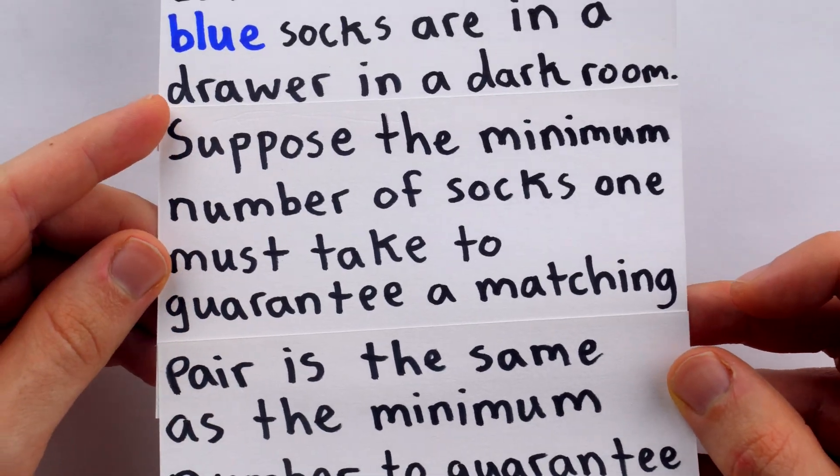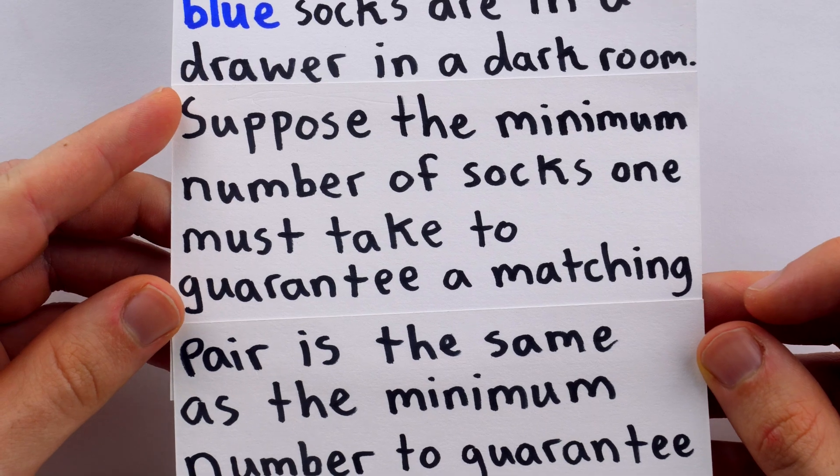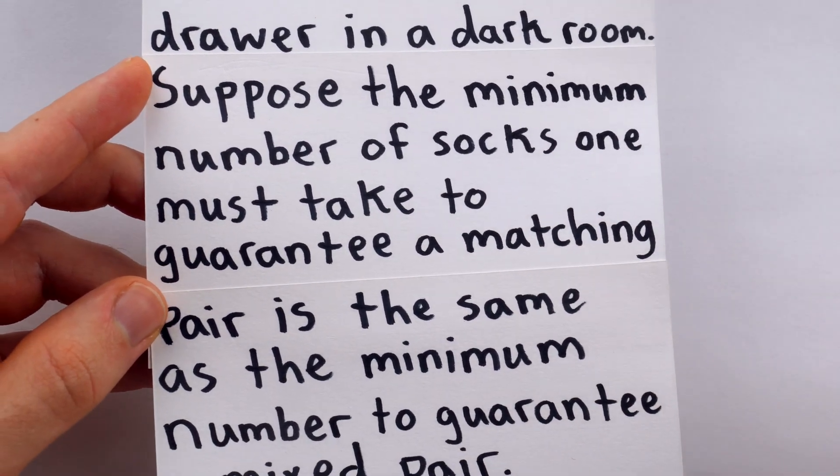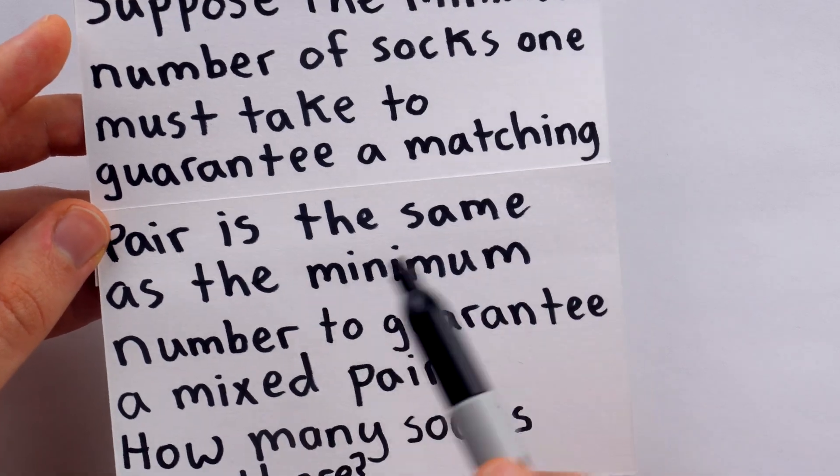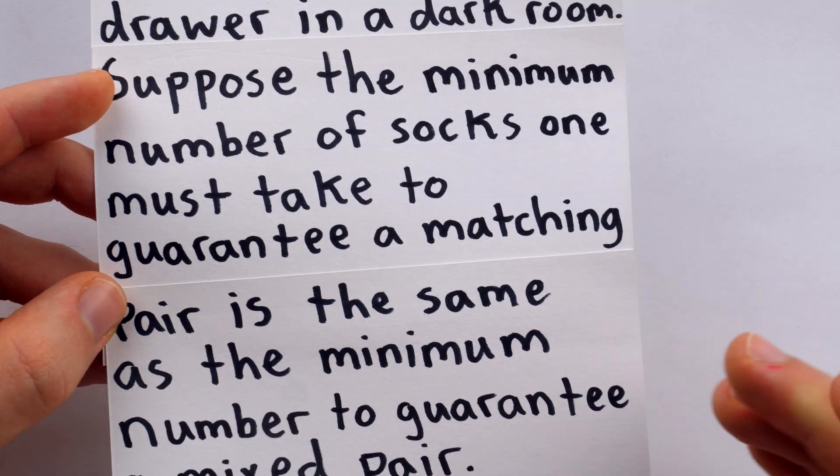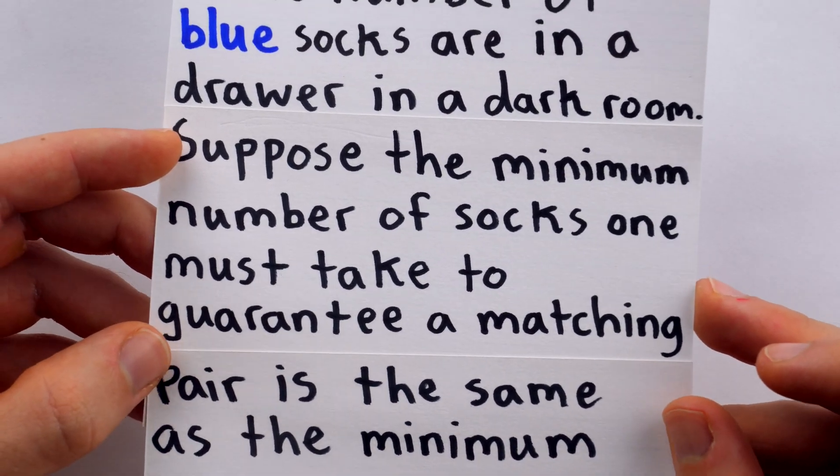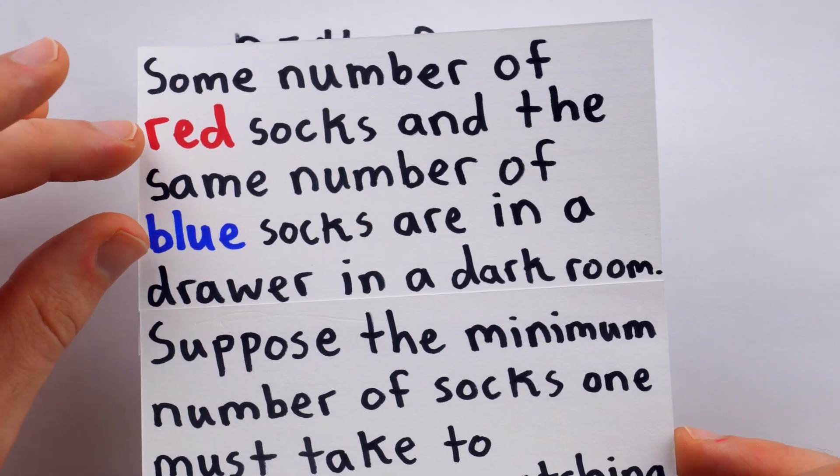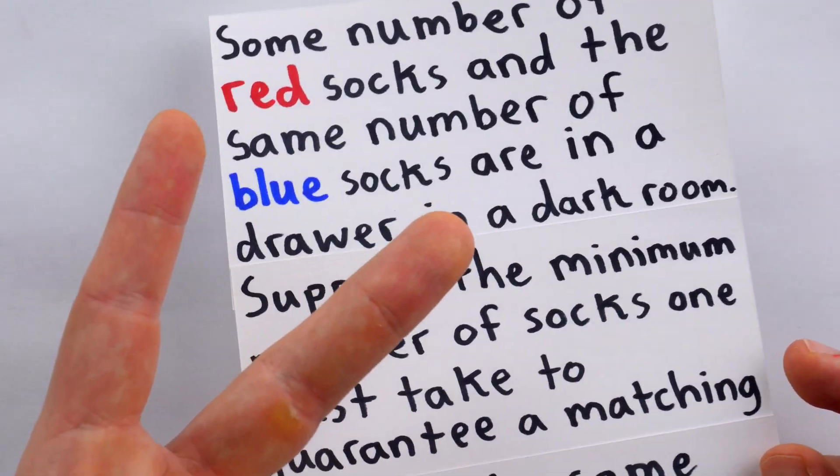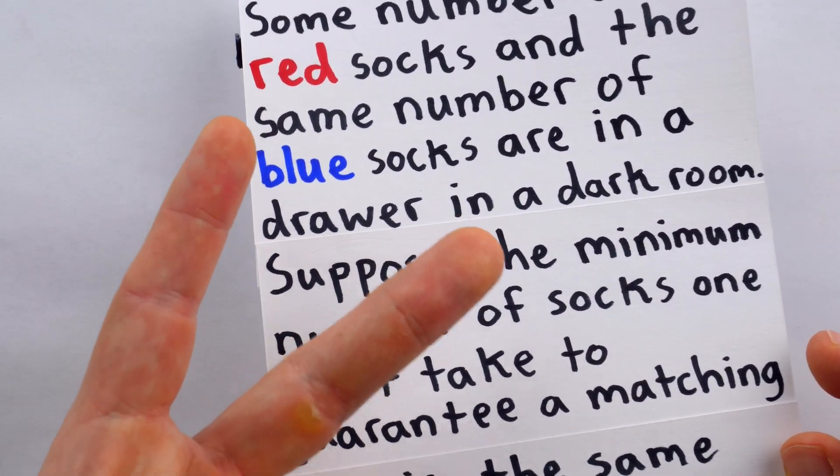Alright, next thing we're told. Suppose the minimum number of socks one must take to guarantee a matching pair, which is just like the problem we just did, that is the same as the minimum number to guarantee a mixed pair. Okay, the minimum number of socks one must take to guarantee a matching pair, like we know, has nothing to do with the number of red and blue socks. It's just three, because there are only two colors, and that's the relevant fact.